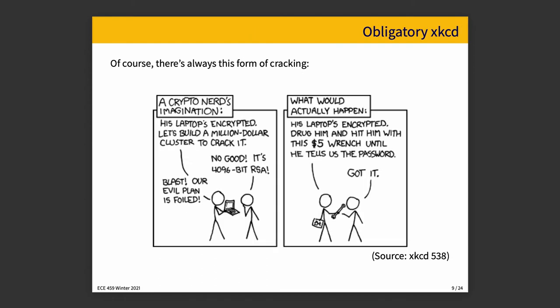There's always this form of cracking — the obligatory XKCD: in the crypto nerd's imagination, his laptop is encrypted and they'll build a million dollar cluster to crack it. But what actually happens is hit him with the $5 wrench until he tells the password. If you've taken a course on computer security, you've probably hit upon the idea that a lot of times humans are the weak points in the system.